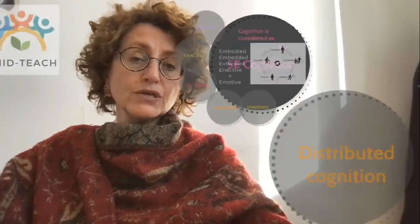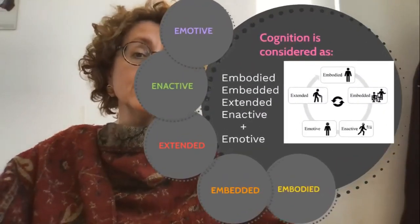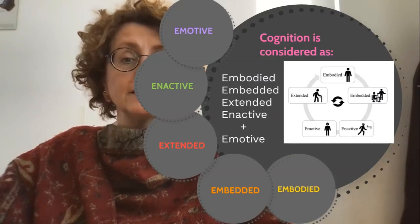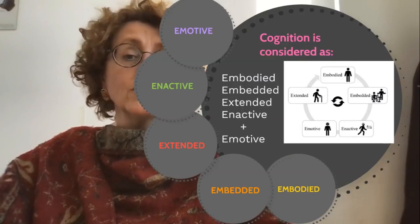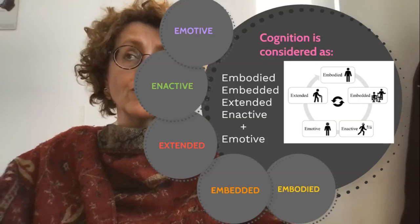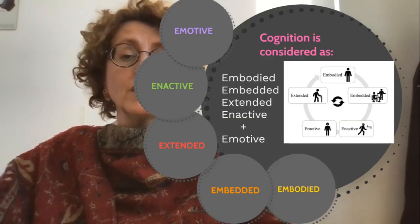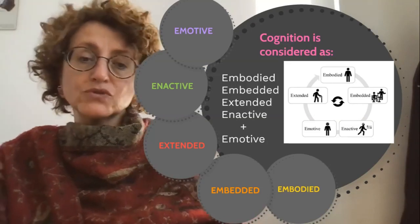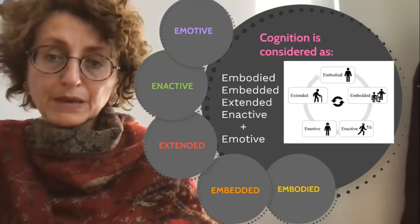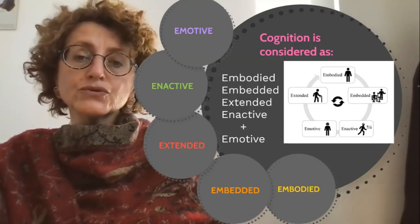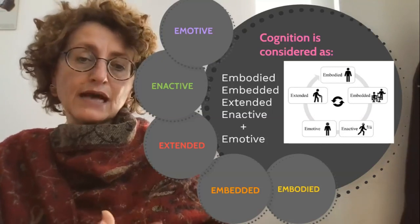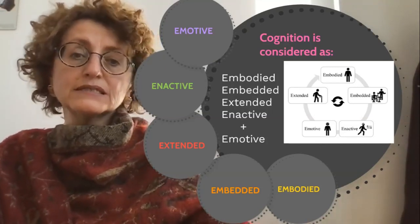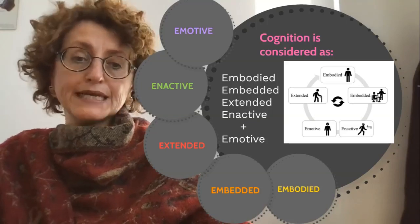Distributed cognition is considered as embodied, embedded, extended, and enacted. This is the principle of e-cognition, which is very well represented in a famous book that you can find in the bibliography, and also in the last period as emotive. Let's see what these terms mean.